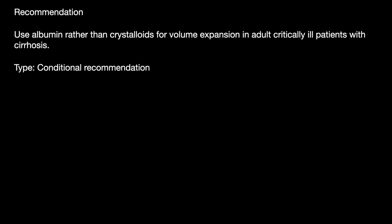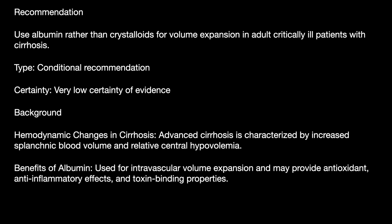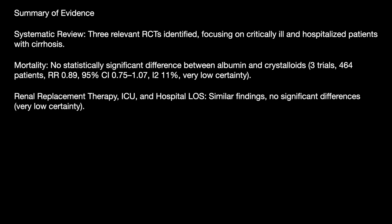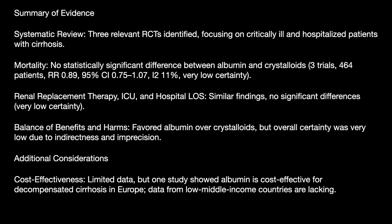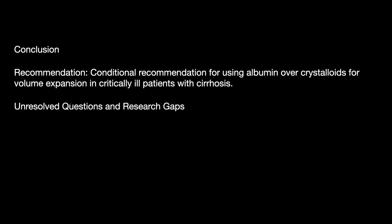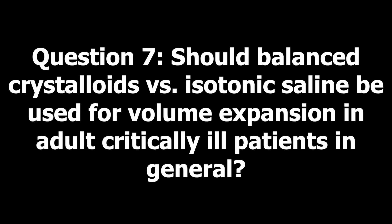Question six: albumin versus crystalloid in cirrhotic patients. The recommendation here is to use albumin rather than crystalloid — a conditional recommendation with very low certainty. In cirrhotic patients there is increased splanchnic volume and relative central hypovolemia; albumin enhances intravascular volume and provides antioxidant, anti-inflammatory, and toxin-removal effects. It is commonly used in decompensated cirrhosis, ascites, encephalopathy, infection, and hepatorenal syndrome. Three RCTs in critically ill cirrhotics showed no statistical mortality or RRT difference, but balance of benefit and harm favours albumin. Unresolved: 5% versus 20% albumin and cost considerations.